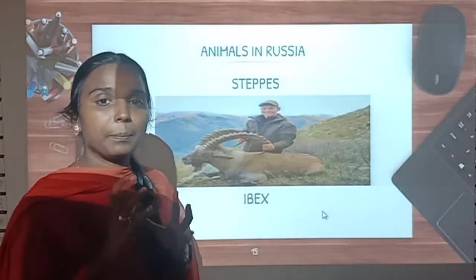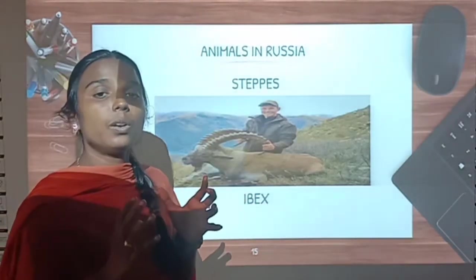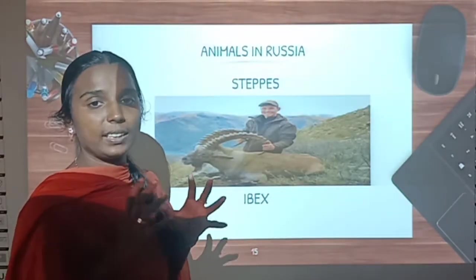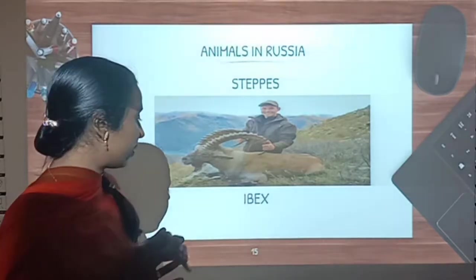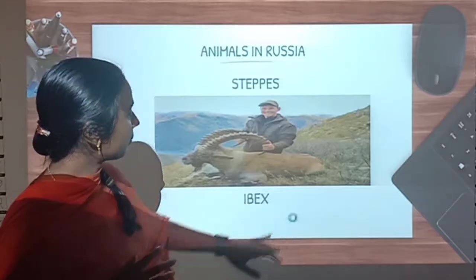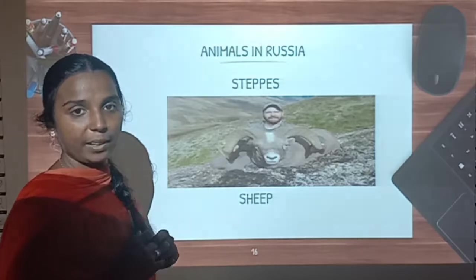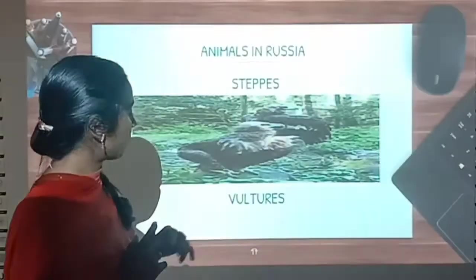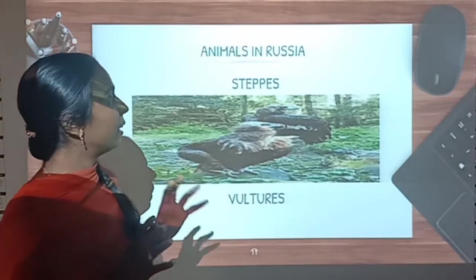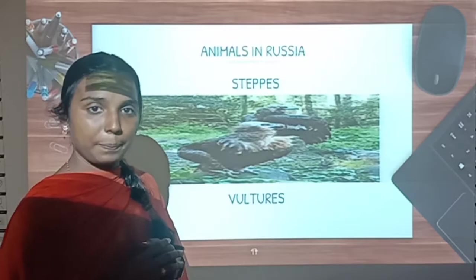Now let us see the important animals we can find in Russia, in the grasslands of Russia. The name of the grasslands in Russia is steppes. Let us see what animals we can find in the steppes. First, ibex — see this animal ibex. And then see sheep, this is the sheep we can see in Russia. And then see vulture, this bird vulture. These are some of the important animals we can find in the grasslands of Russia, the steppes.